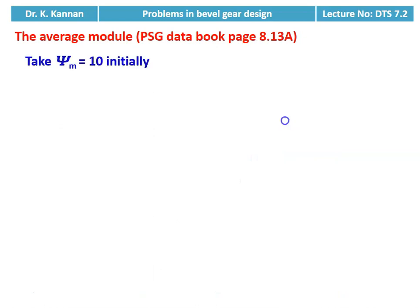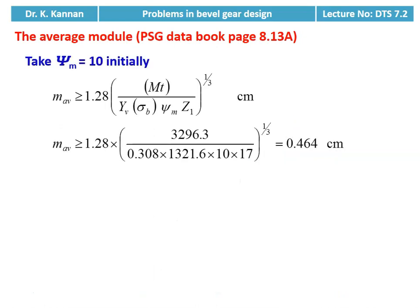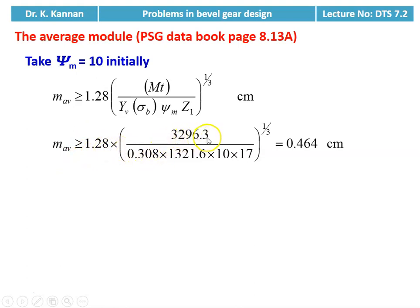We calculate the average module. The equation is on page 8.13A. We take ψm = 10 initially. The equation: m_avg ≥ 1.28 × [MT(design) / (YV × σB × ψm × Z1)]^(1/3). Substituting numerical values: m_avg ≥ 1.28 × [3296.3 / (0.308 × 1321.6 × 10 × 17)]^(1/3) = 0.464 centimeter.